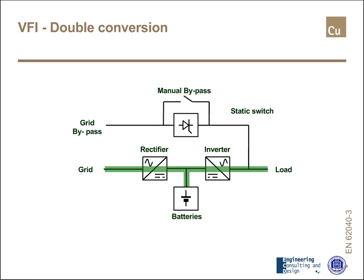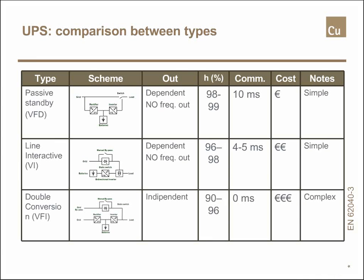From this double conversion comes the name of the class. Without the network, energy is provided to the load by batteries. In comparison with the first scheme, we can see immediately that we do not have to switch anything when moving from grid operation to battery operation. In this table, I tried to compare these three main types of UPSs.